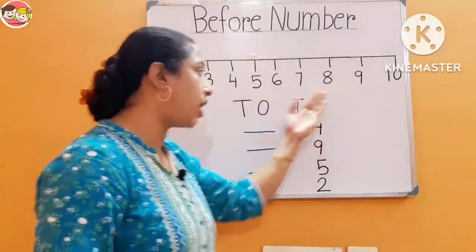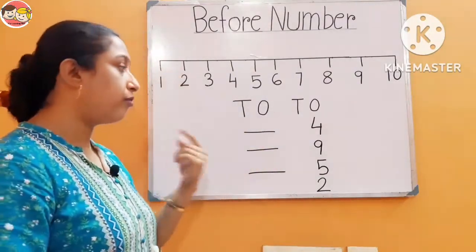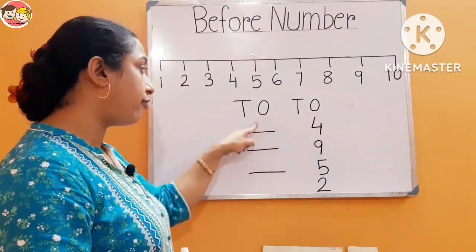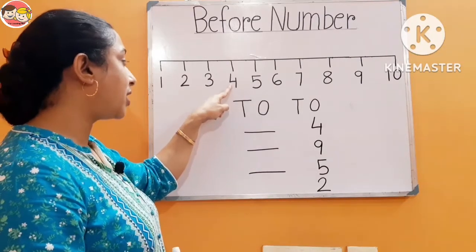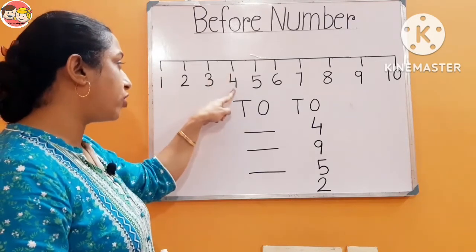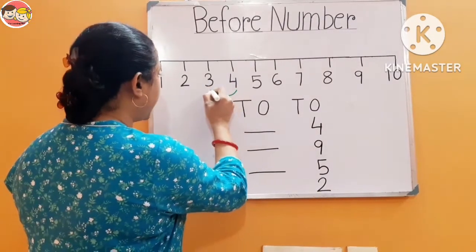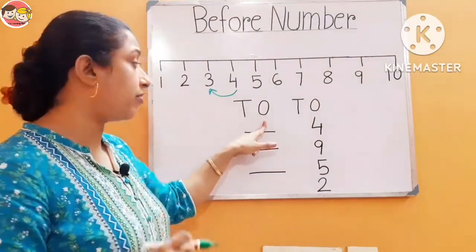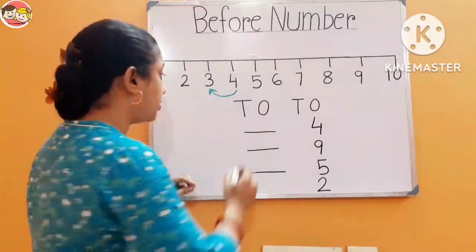So when we do backward counting, we get to know what comes before. For example, this is number 4. What comes before number 4? Look at the number line — before means pehle — number 4 se pehle kaun sa number? Number 3. So here we have to write number 3. Children, observe carefully — here the left side places are empty.